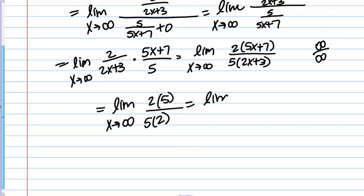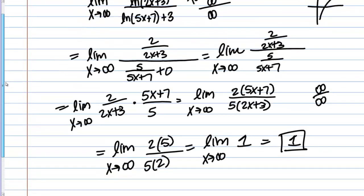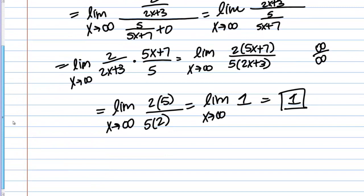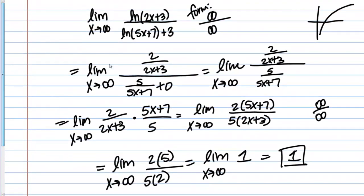This looks like the limit as x goes to infinity of 1. That's just 1 because 1 is a constant. Any limit is just going to give you 1. We use L'Hopital's rule twice to find the limit in this case. Just remember that you can only use L'Hopital's rule when the form is 0 over 0 or infinity over infinity.